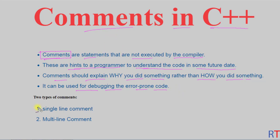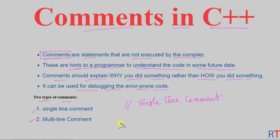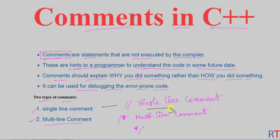There are two types of comments available in C++: single-line comment and multi-line comment. The single-line comment is done by using two forward slashes — after the two forward slashes we can write our single-line comment. The multi-line comment is done by using one forward slash followed by a star, and closed by a star and forward slash, and inside those two expressions we can have our multi-line comment.